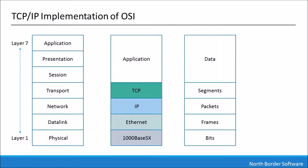TCP/IP works at layers 3 and 4, so there needs to be a layer 1 and 2 to satisfy it. Here you can see an example of how Ethernet is applied at layer 2, running over 1000BaseSX, which is a multimode fiber optic standard used in local area networks. Equally, this could be something more appropriate to the wide area network, such as PPP running over X.21, which is typically used in E1 or 2-megabit lines. This shows the modularity available within the OSI stack.